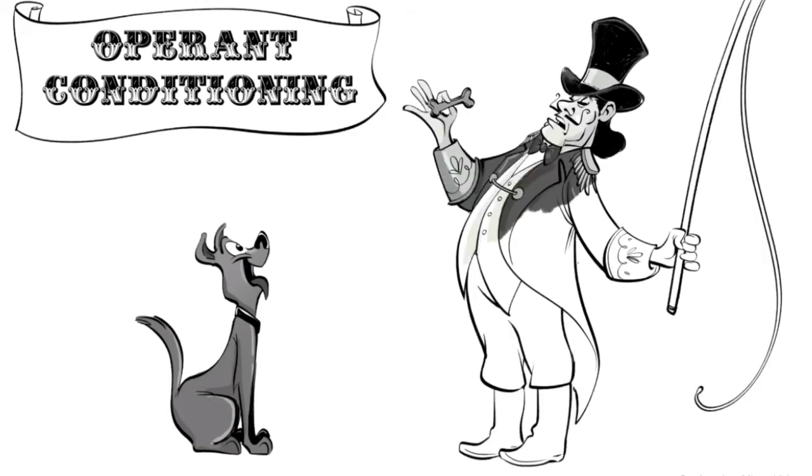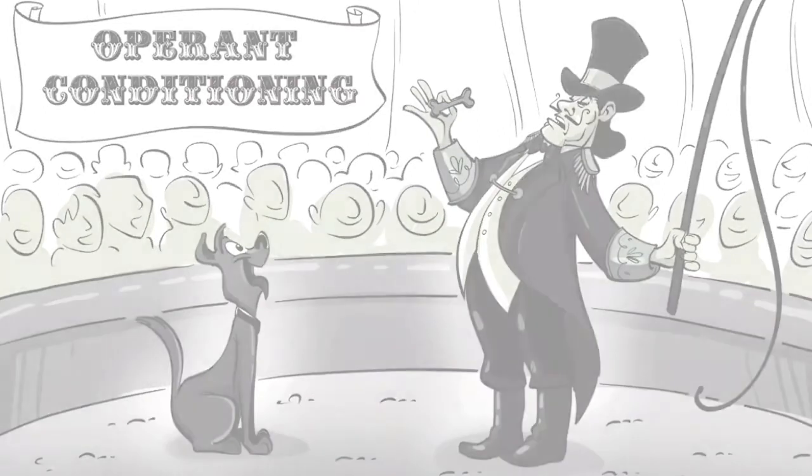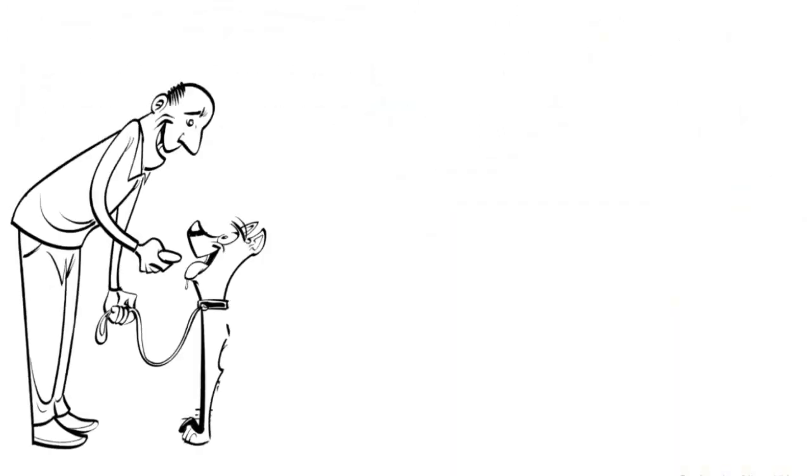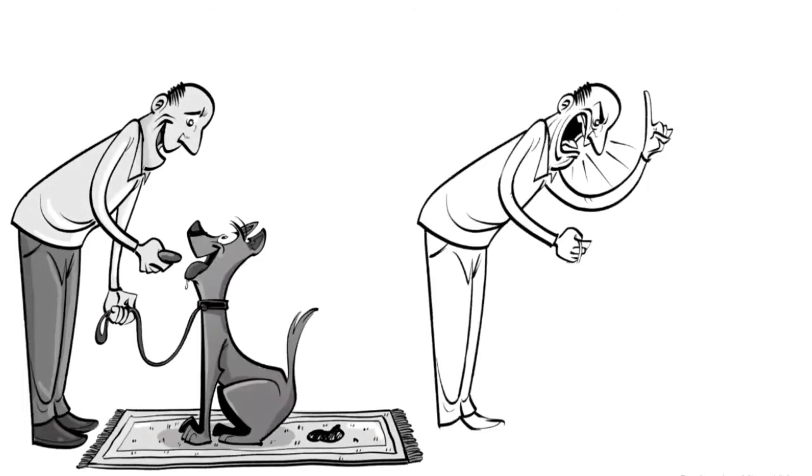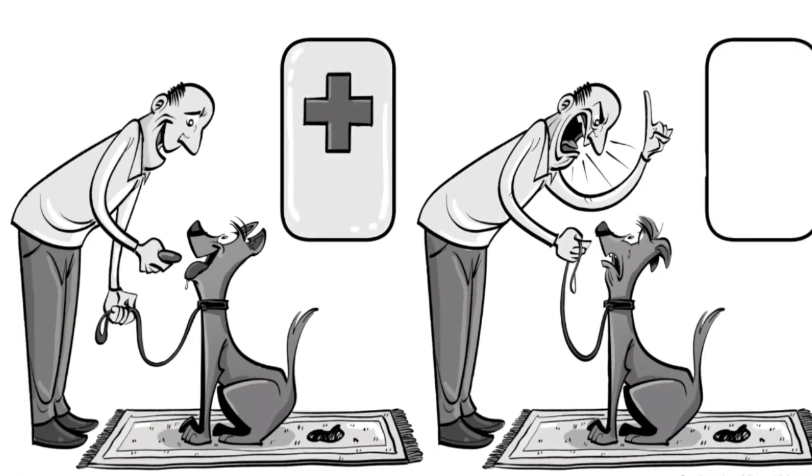Operant conditioning is based on the idea that we can increase or decrease a certain behavior by adding a consequence. For example, if a dog poops on a carpet, we can either provide reinforcement so the dog does it again, or punishment so the dog stops. Both reinforcement and punishment can either be positive or negative, which means we have four possible ways to teach this dog a lesson.